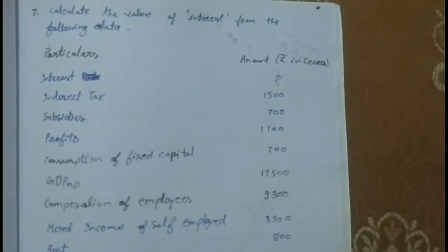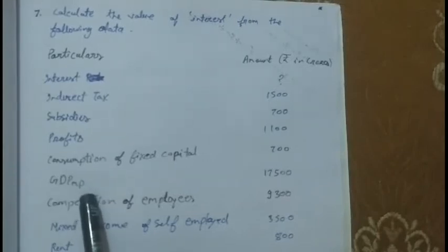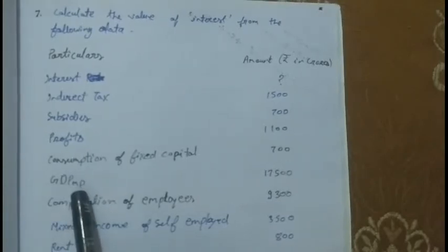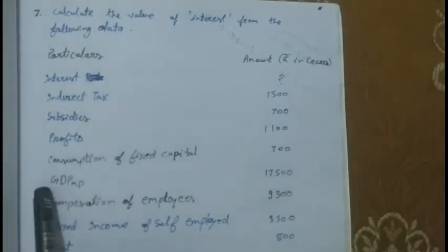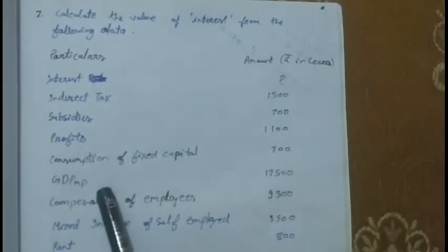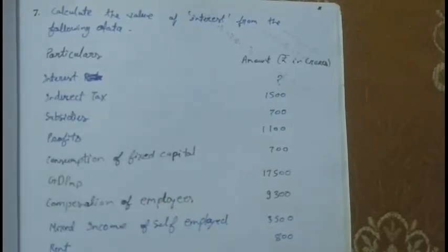Income method: first, what is the formula of the income method? Here GDPMP is given. When we solve a question by the income method, we get NDPFC as the answer. So our answer will be NDPFC, and then we have to convert it into GDPMP. After that we will see how we can get interest.